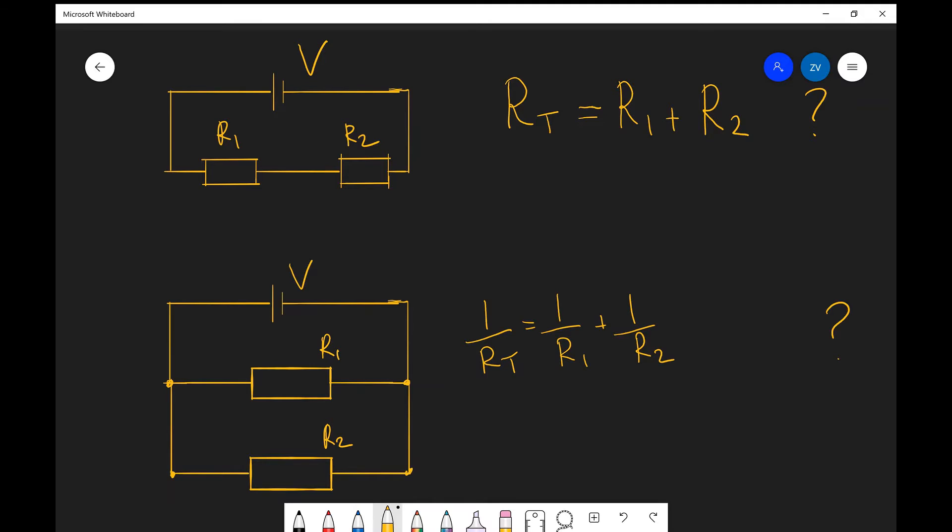So we can say that this total V is going to be equal to V1 plus V2, where V1 and V2 are the potential differences across the respective resistors. So in this case we can also add Ohm's law that V is equal to IR.